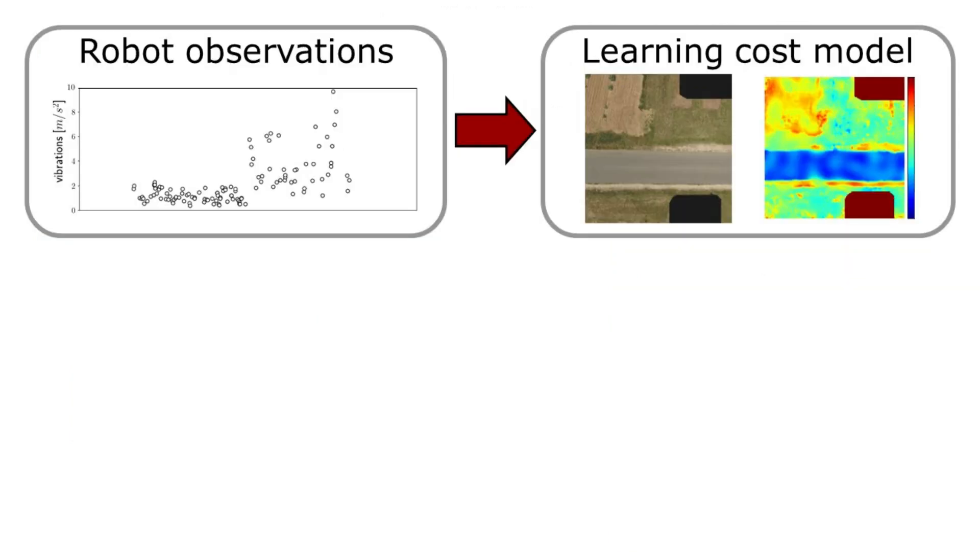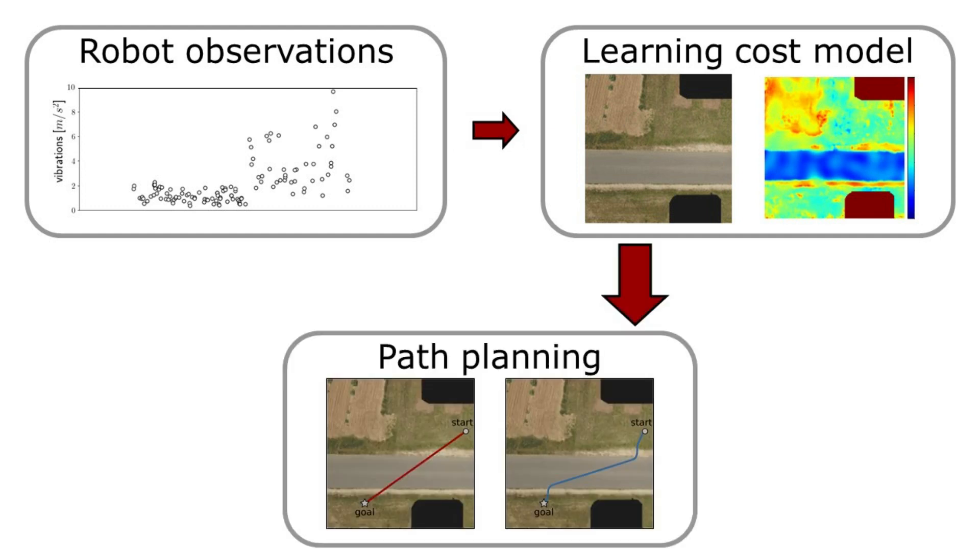Our approach improves navigation by continuously learning a cost model from the robot observations, using this model for planning paths and collecting new observations along these paths to update the model.